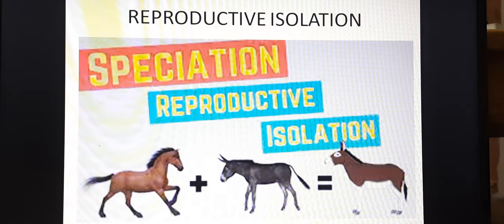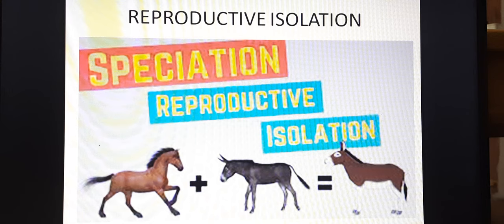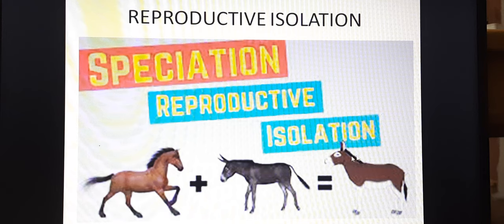Next is reproductive isolation. Due to speciation, the gene pool of a section of population separates from the rest, and there is an inability to interbreed of the two populations. Due to the difference in the morphology of the reproductive organs, behavior, mating time, and physiological incompatibility, it is ultimately called reproductive isolation. For example, horse and donkey produce a mule. Mule is reproductively isolated and therefore it is sterile — mule cannot produce a new mule. So this is called reproductive isolation.